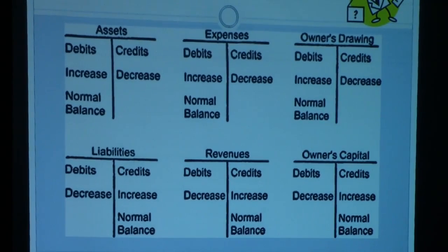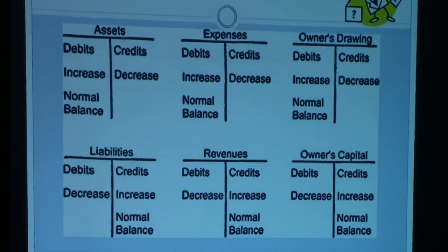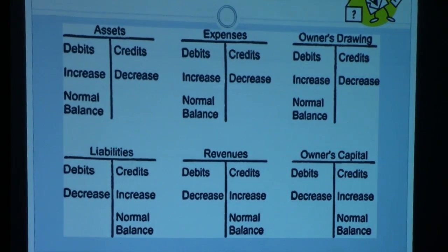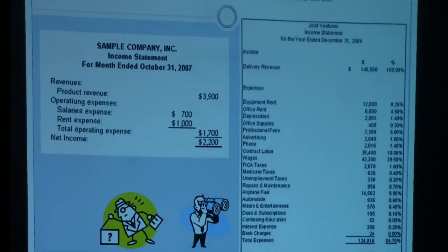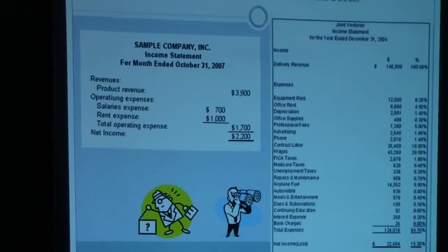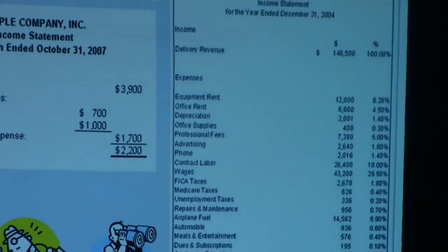The debit and credit rules are outlined on a reference slide — if you're having trouble with exercises or homework, refer to it. It covers all account types from the balance sheet to the income statement and how debits and credits affect each T-account. The income statement shows revenues, expenses, and net income in both simple and more detailed formats, and it comes out of the trial balance, which comes from the expanded ledger.